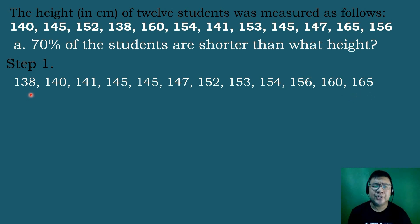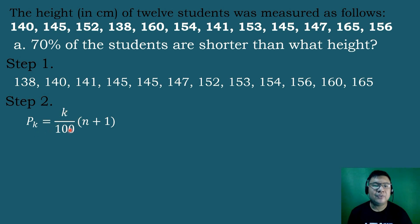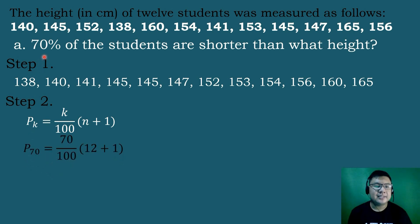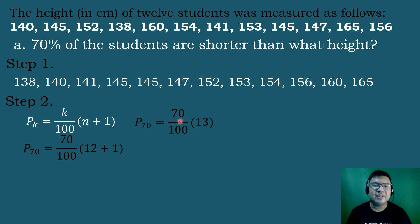Arrange from the lowest score up to the highest score. Step 2 is to locate the position of the score in the distribution by using the formula: P sub k equals k over 100 times the quantity n plus 1. Since this is 70% of the students, we are dealing with percentile. So k equals 70. P70 equals 70 over 100 times the quantity n equals 12, plus 1. So 12 plus 1 equals 13, and 70 times 13 divided by 100 equals 9.1.